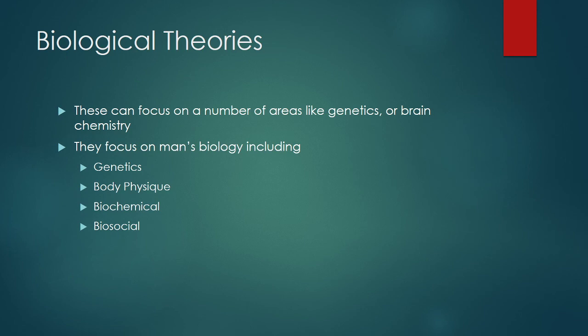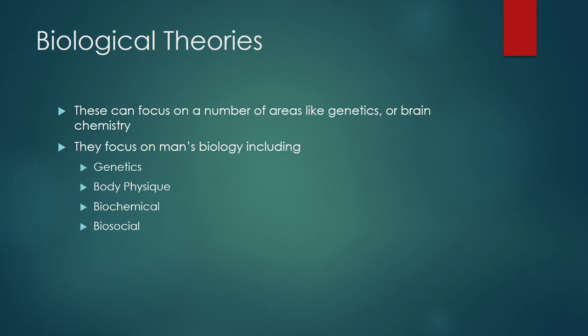Biological theories can focus a little externally and a little internally — it's a mix. They focus on things like genetics or brain chemistry, including whether someone has a predisposition towards violence. Consider this: genetics determines early on whether you are male or female, and almost all crimes are committed by men, so genetics clearly plays at least some role in crime. There's also atavism — the idea that body physique is a manifestation of criminal tendency — which has been largely dismissed. Biochemical and biosocial theories are more robust and developed but there isn't time to go too deeply into them.